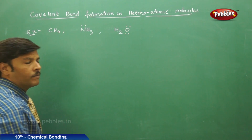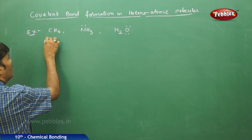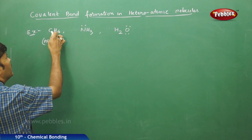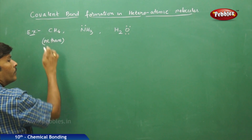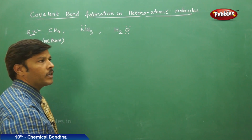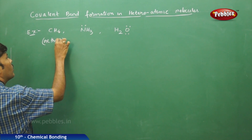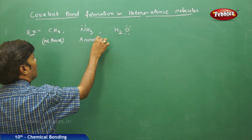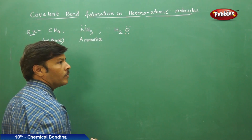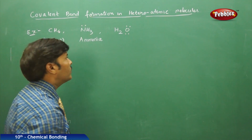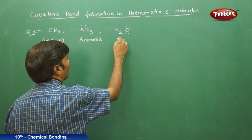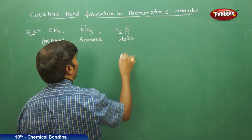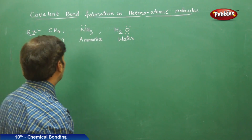CH4 is the methane molecule — it is heteroatomic because it has different atoms in it: carbon and hydrogen. Ammonia NH3 also has different atoms. H2O water is a polar covalent molecule and again it is heteroatomic.